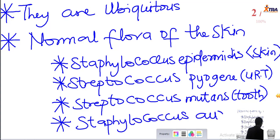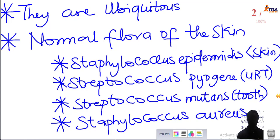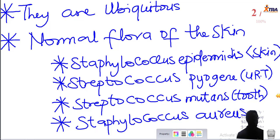The point is that bacteria are everywhere, and even in our bodies they are present in healthy individuals. A healthy individual is home to a great number of bacteria — your stomach, small intestine, upper and lower respiratory tract, and skin are all brimming with bacteria. They are not harmful because they are already established there, and they prevent the invasion of other microorganisms through competition, forming a protective function.